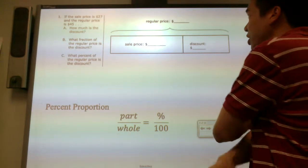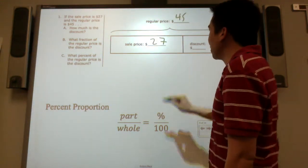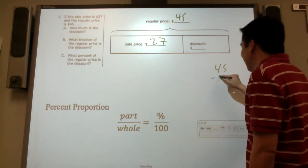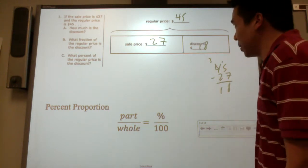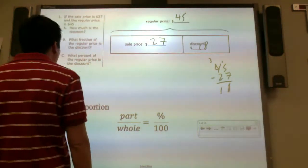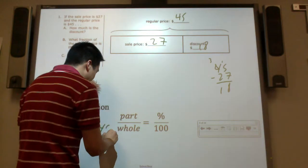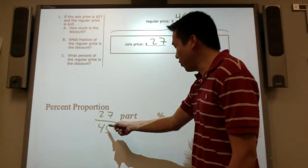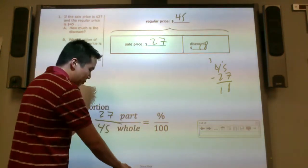Let's try another question. If the sale price is $27 and the regular price is $45, how much is the discount? If I pay $45 but they say it's going to sell for $27, how much is my discount? If I subtract this, my discount would be $18. Because $27 the sale price plus $18 the discount makes a total of $45. What fraction of the regular price is the discount? They want us to find the percent. The whole price is $45.